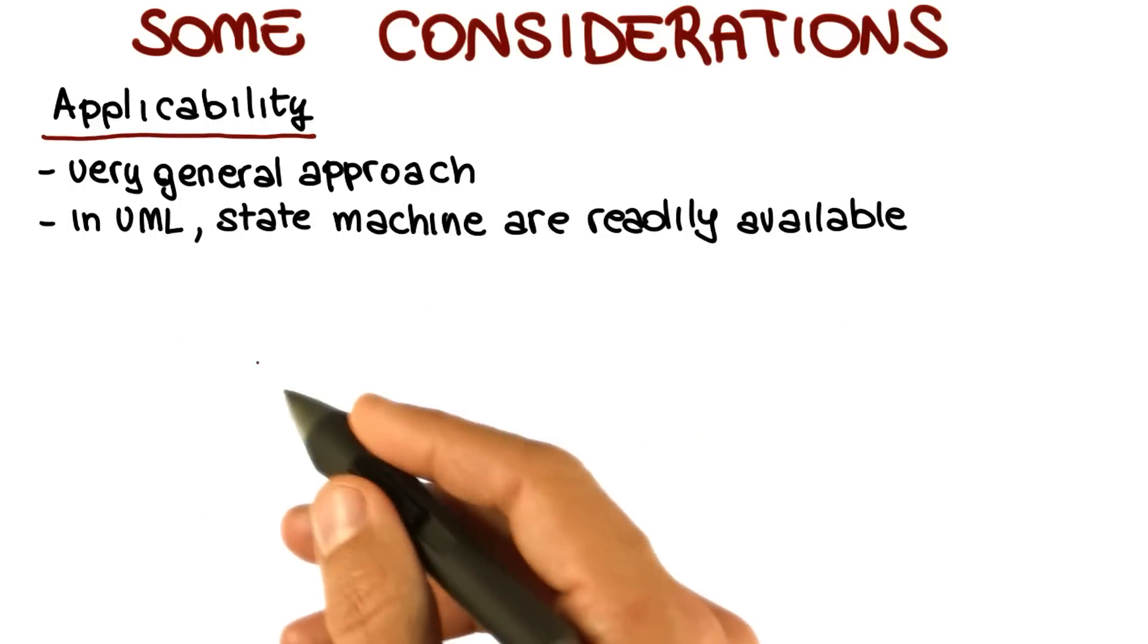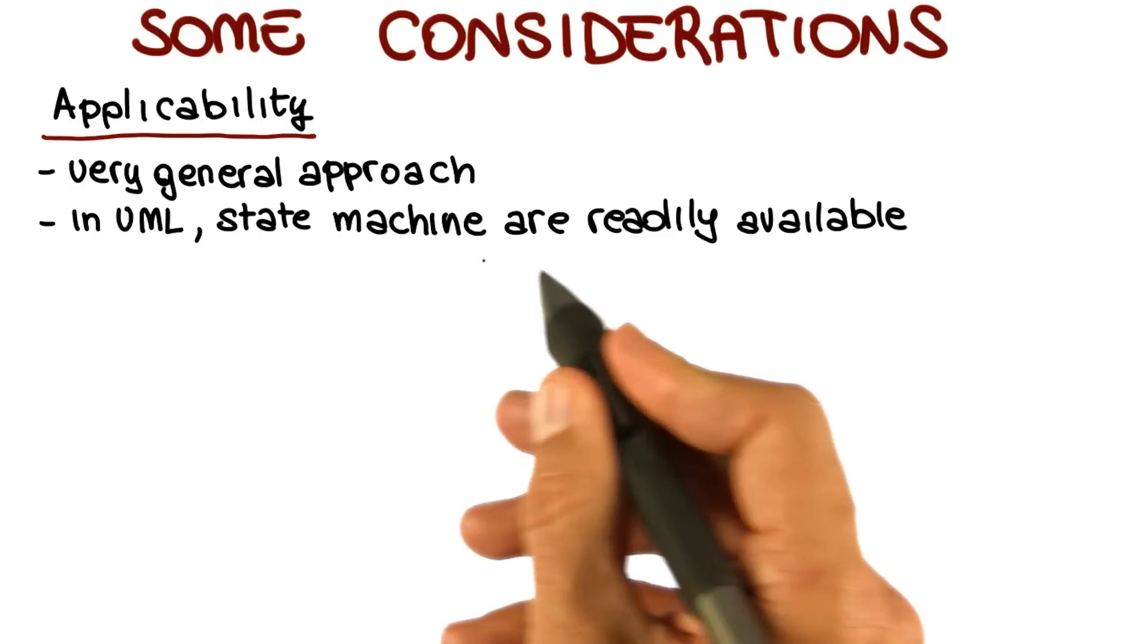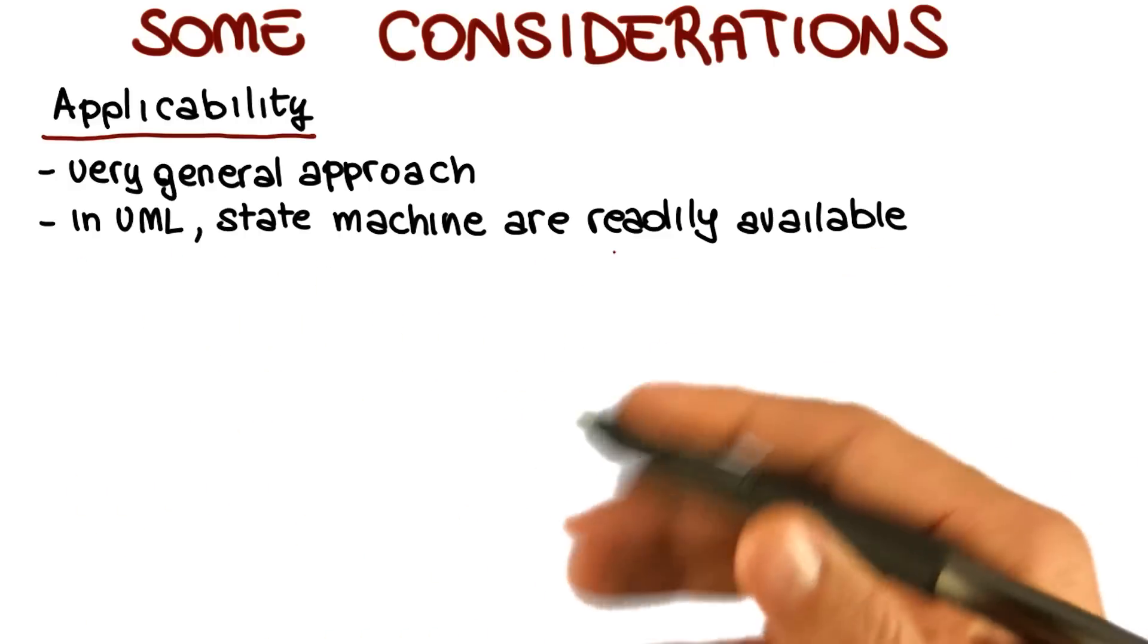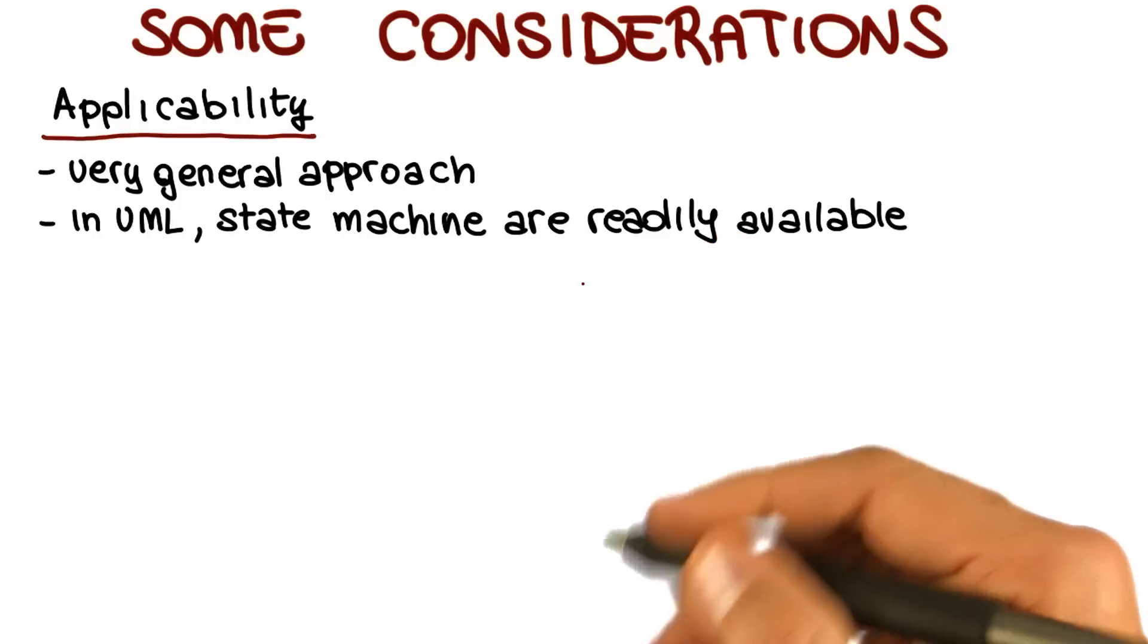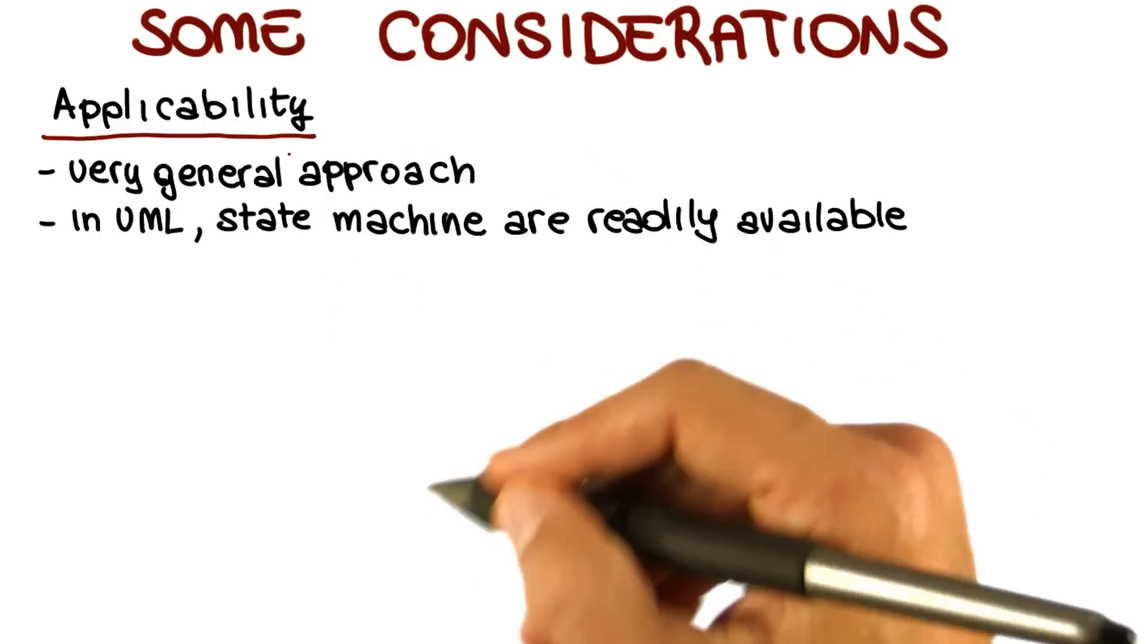In particular, if you're working with UML, you have state machines for free because state charts are nothing else than a special kind of state machines. So you can apply the technique that we just saw directly on state charts and try to cover their states and their transitions.